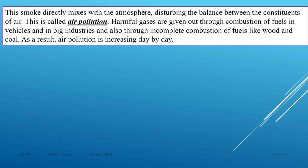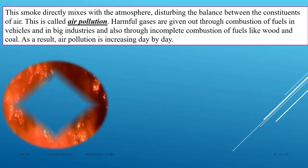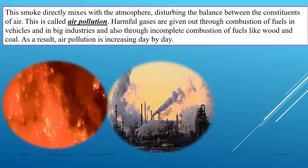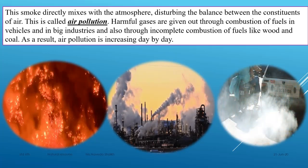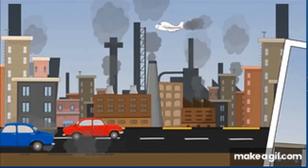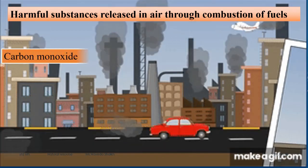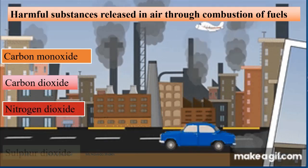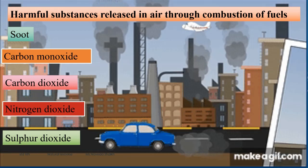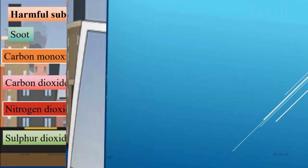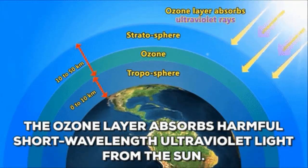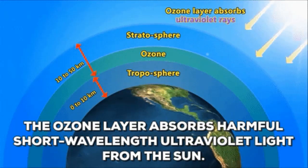Harmful gases are given out through combustion of fuels in vehicles, in big industries, and also through incomplete combustion of fuels like wood and coal. If coal or wood does not burn completely, they give out harmful gases which are extremely dangerous for us, leading to air pollution. Air pollution is increasing day by day because of fire, industries emitting harmful gases, and vehicles. Harmful substances released include carbon monoxide, carbon dioxide, nitrogen dioxide, sulfur dioxide, and soot. In the next period, we will be learning about the ozone layer as time is up.